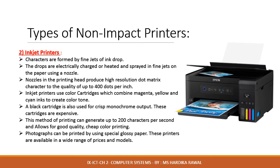In inkjet printers, the characters are formed by fine jets of ink drops. The ink drops are electrically charged or heated and are sprayed through fine jets onto the paper using a nozzle. The nozzle in the printing head produces high resolution dot matrix characters with quality of up to 400 dots per inch.